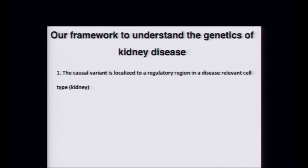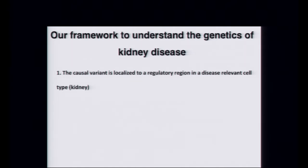The variant should alter target gene expression in this disease-relevant cell type, most likely by altering transcription factor binding, though we could accept other mechanisms. We believe the target should be expressed in the kidney, and that target expression should change in disease states. We'd like to see a correlation: if the risk allele increases target expression, we hope to find the same correlation in samples from patients with chronic kidney disease. Obviously, the target expression should somehow cause kidney disease and therefore should be functional. I'll go through a couple of examples.